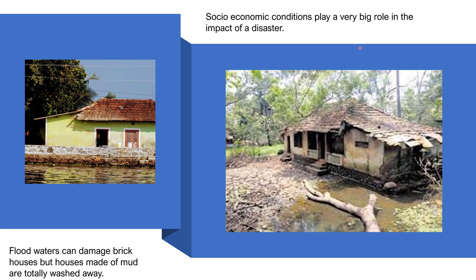The socio-economic conditions also play a big role in the impact of a disaster. The poor people suffer the most — when floodwater strikes, brick houses may be damaged but are normally not washed away, whereas a mud house is very badly damaged and can be washed away. The poor do not have savings to recover, and most of their belongings and means of livelihood are lost. Their suffering continues for a very long time even after the disaster's effects are over.